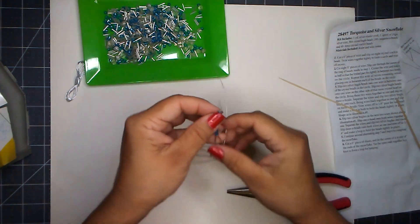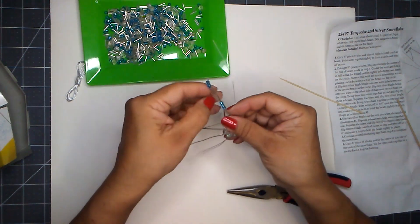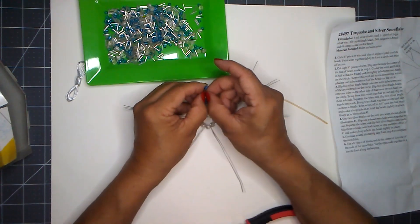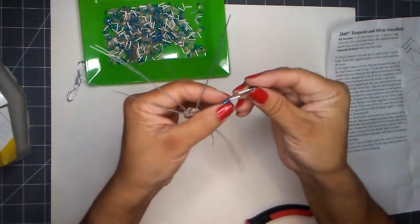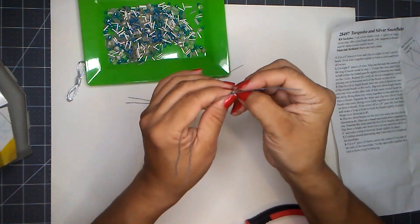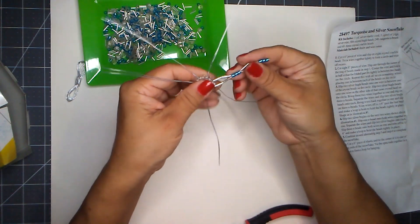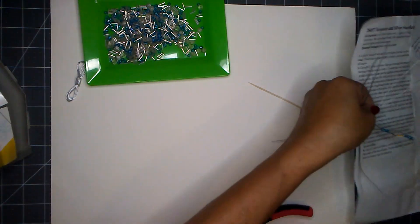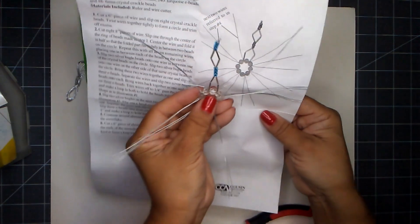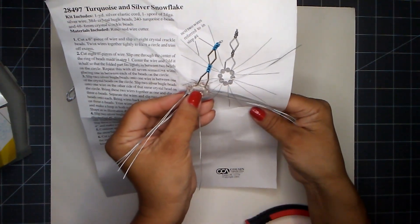Ta-da! And then of course just flatten that loop that you just created and then kind of separate that. See there, it kind of creates that diamond shape right there, right? See, look at that. Hold on, let me show you the picture. That's what we have. Cute.